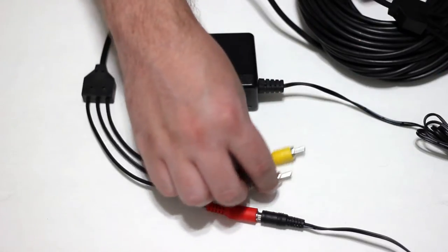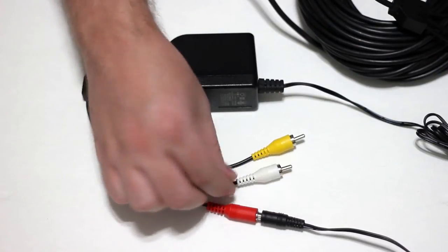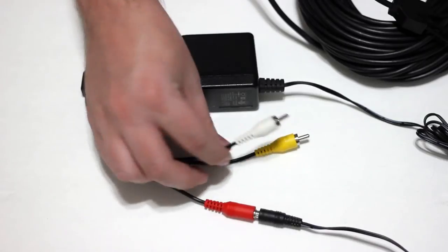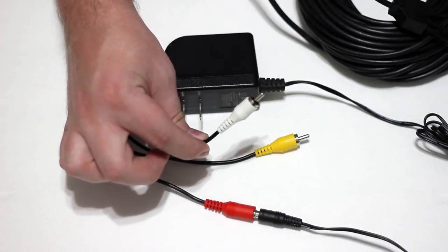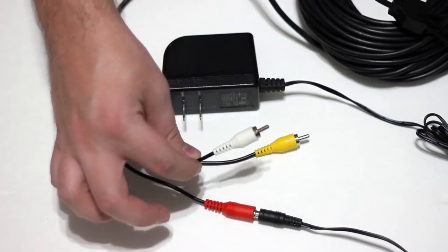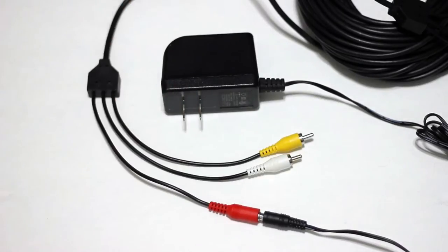And then whatever color RCA you used on the other side, you have to use on this side. So I used the white. This would plug into the DVR and you would have a functioning microphone on your DVR. Simple as that.